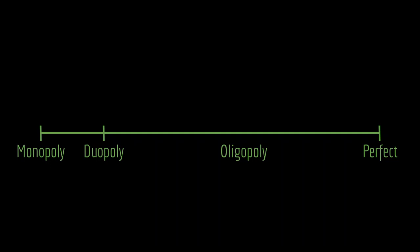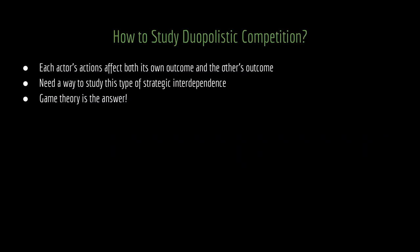So we're focusing on duopolies. How do we study duopolistic competition? We're going to use game theory to do this. The reason is that we have strategic interdependence — each actor's actions affect both its own outcome and the other's outcome. The firms are in a strategically interdependent world. If we need a way to study interdependence, game theory was developed just for that purpose. That's why we are going to be using game theory to analyze these duopolistic competition scenarios.